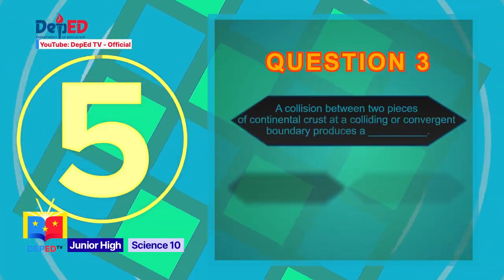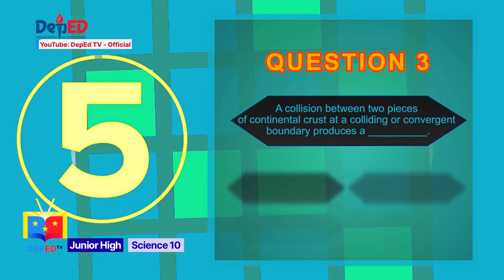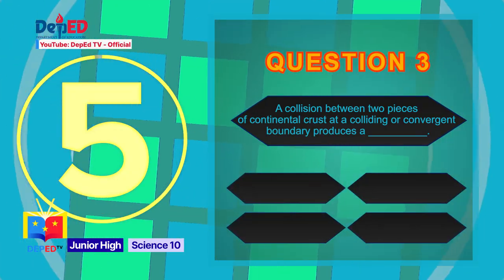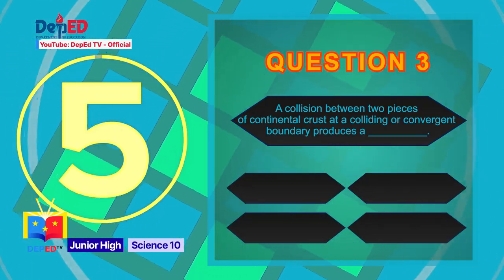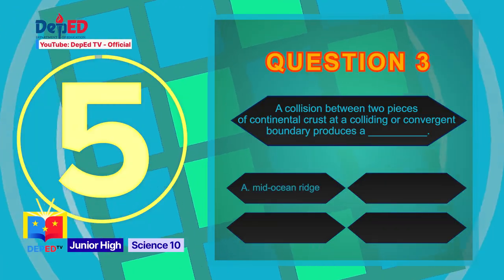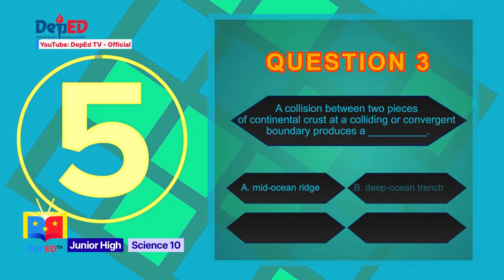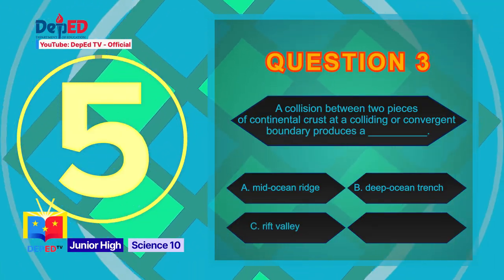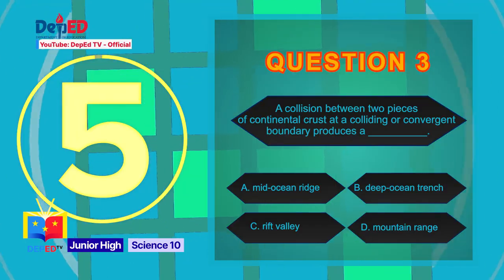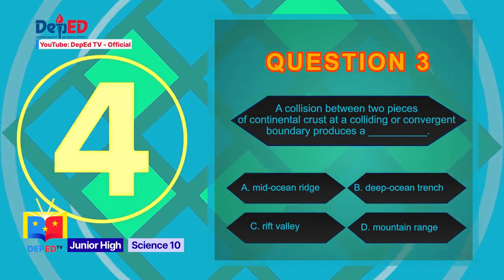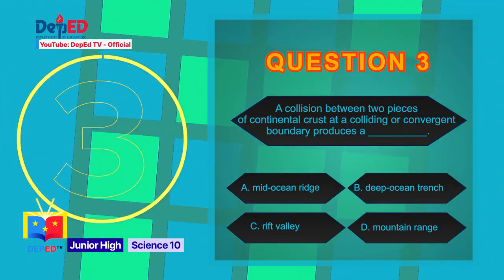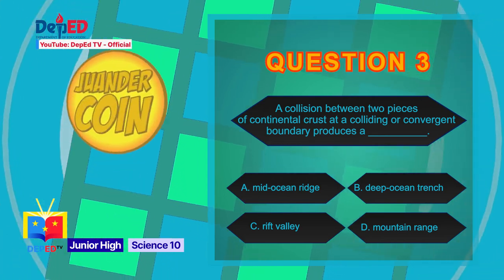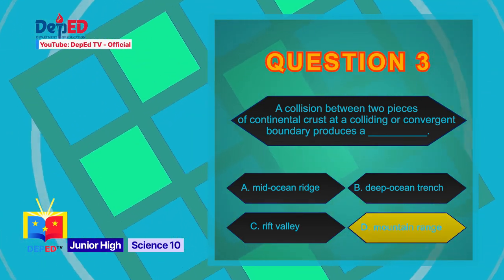Question number 3: A collision between two pieces of continental crust at a convergent boundary produces a — A) mid-ocean ridge, B) deep ocean trench, C) rift valley, or D) mountain range. The correct answer is letter D: mountain range.